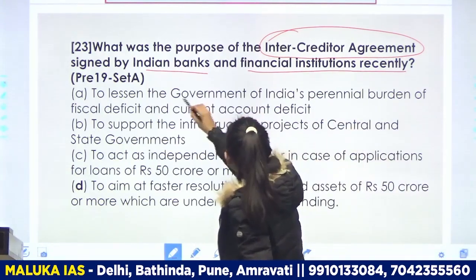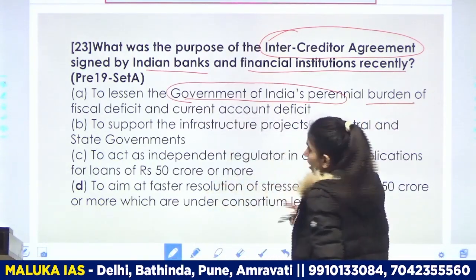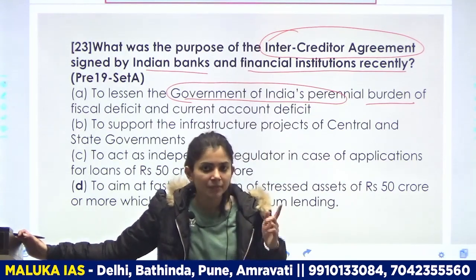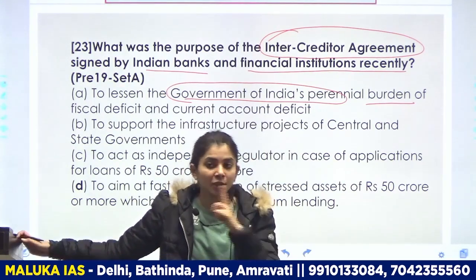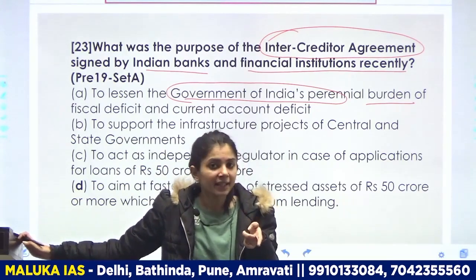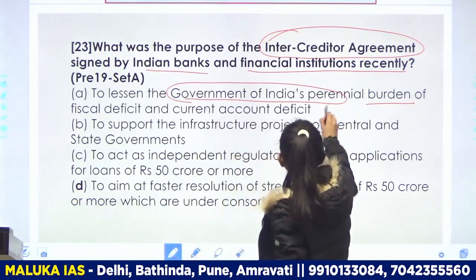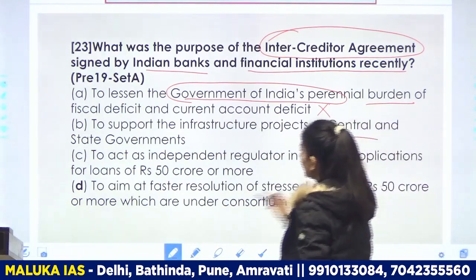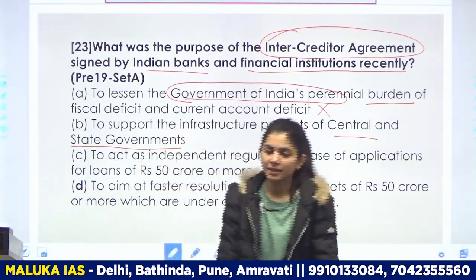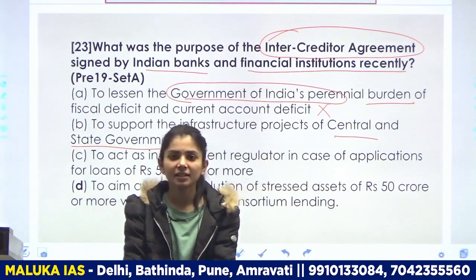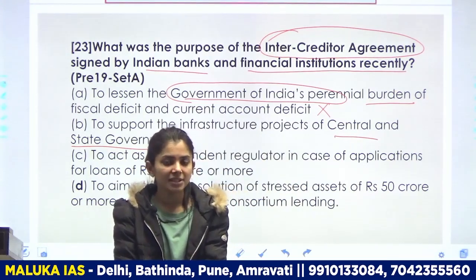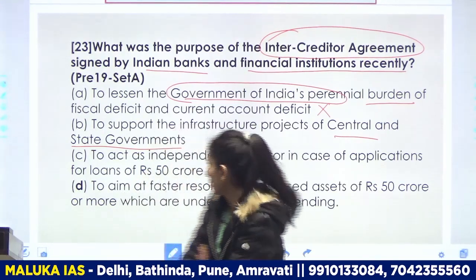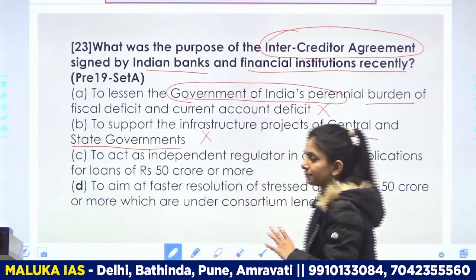Banks को मतलब है deposits से, lending से, उस process में जो interest rate है जो RBI decide करके बताता है — उससे फर्क है। So option A answer नहीं होगा। Second statement: to support the infrastructure projects of central and state government — inter-creditor agreement है between creditors, involving banks and financial institutes — infrastructure का कोई association नहीं बन रहा। So statement B wrong है।